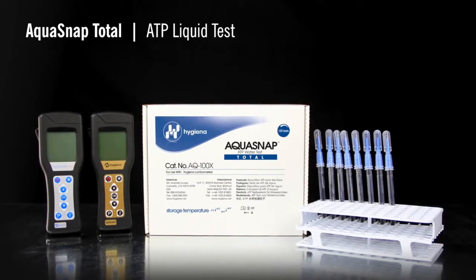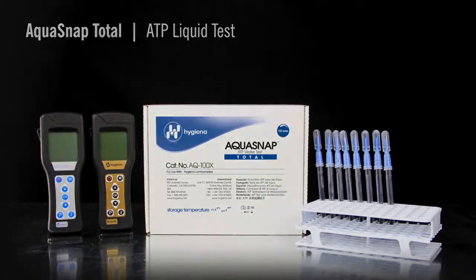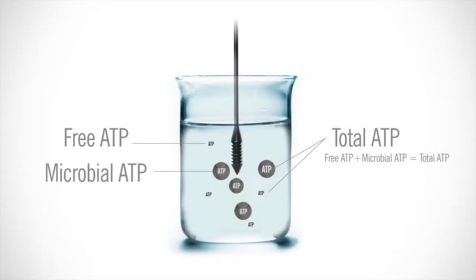The test device is available in two different variations, free and total. Aquasnap free measures dissolved ATP that is free-floating in solution. Aquasnap total measures both free ATP in solution and microbial ATP. For more information on the differences between total and free ATP, visit our website.